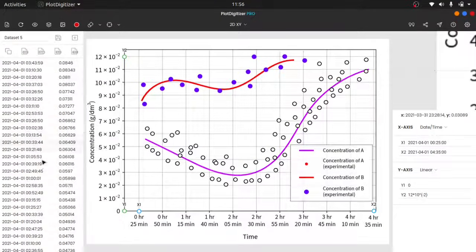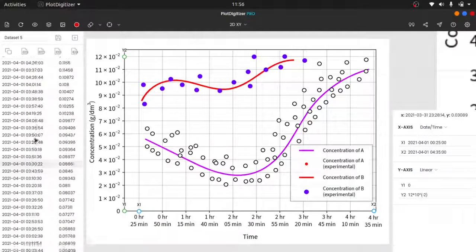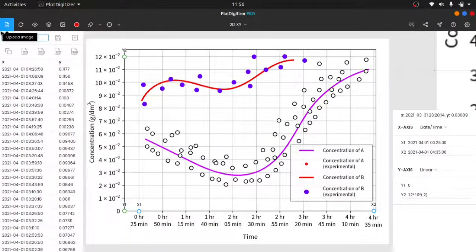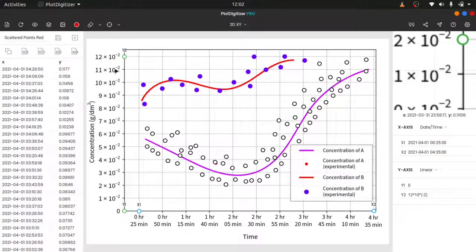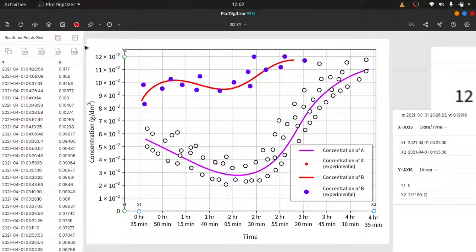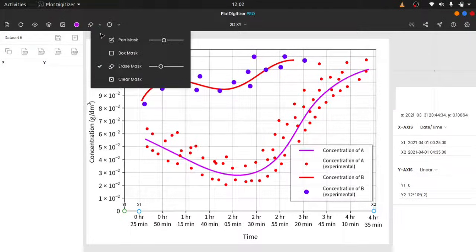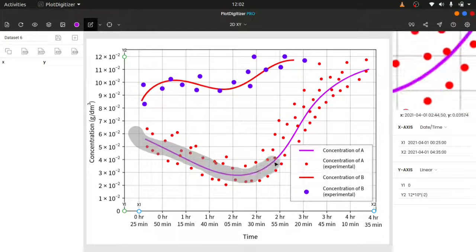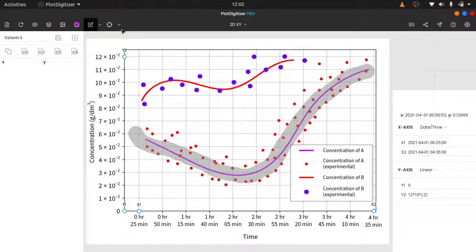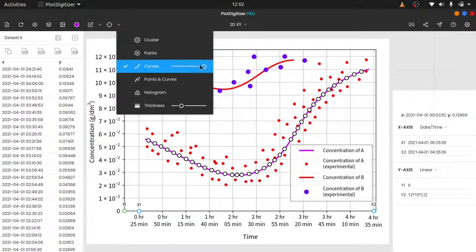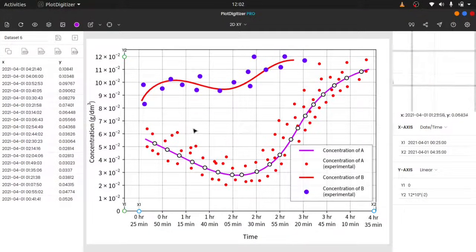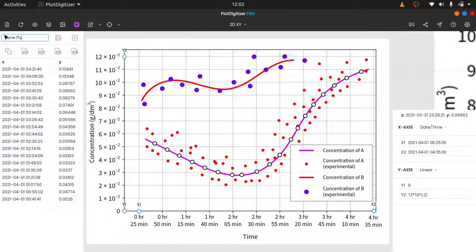All the extracted data can be seen on the dataset table. We will save them first and then proceed to the others. We will repeat the same steps for the rest. For the curve, you can increase or decrease the point density with this slider.